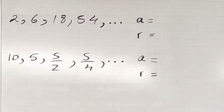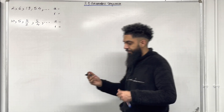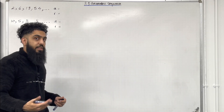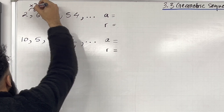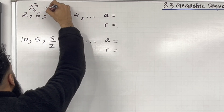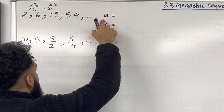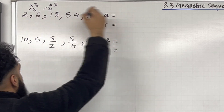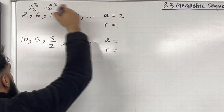Over here I've got two different sequences. For each of these sequences, I want to identify the pattern between consecutive terms. Starting with the first sequence: to get from 2 to 6, I multiply by 3; from 6 to 18, I multiply by 3, and so on. A is called the first term — in this case, the first term is 2. R is called the common ratio — in this case, R is 3.